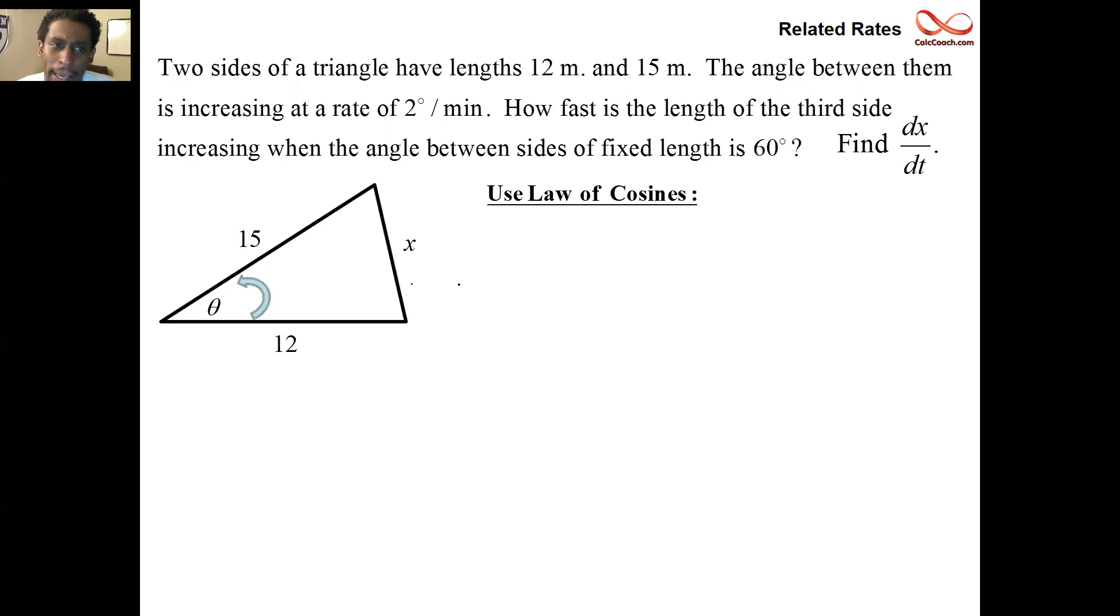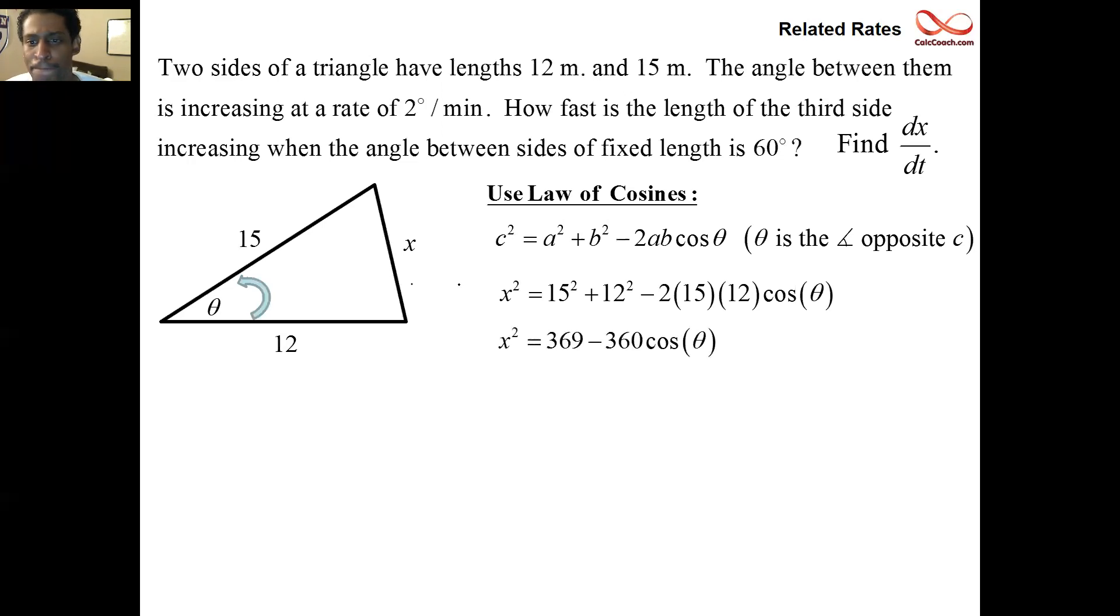What it says is that the third side that's opposite the angle squared is equal to the other two sides squared added up minus twice the product of the other two sides times the cosine of this opposite angle. So x² = 12² + 15² - 2(12)(15)cos(θ), and that will relate x to theta. Those are the only changing quantities, the other guys are constant. 15² is 225, 12² is 144, they add up to 369, so here's our equation: x² = 369 - 360cos(θ).